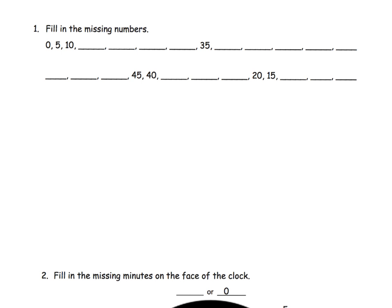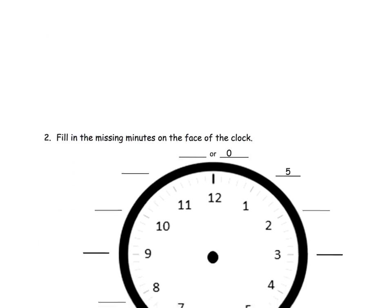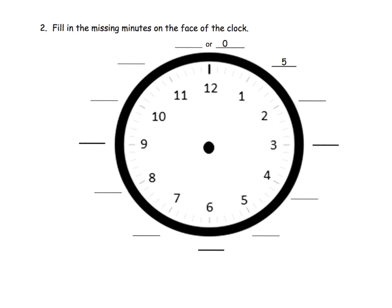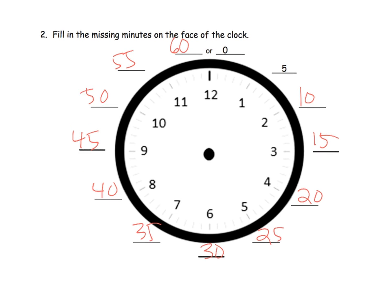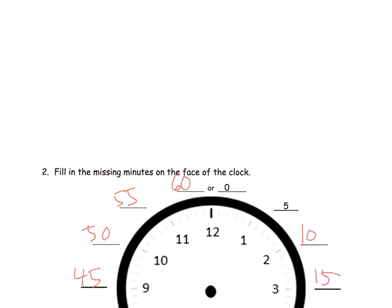Students have had plenty of opportunities playing with that clock, so now we're going to do some skill building toward reading the clock. First, we'll fill in the missing numbers with skip counting by fives: 5, 10, 15, 20, 25, 30, 35, and so on. Then we do the exact same thing on the face of a clock: 5, 10, 15, 20, 25, 30, 35, 40, 45, 50, 55 — and then 60 wraps around to a brand new hour.